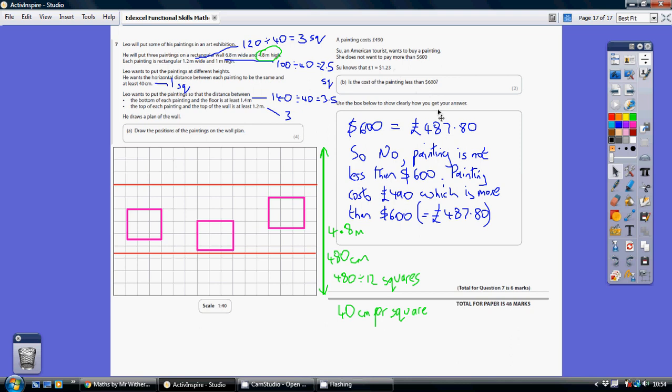So basically she's prepared to pay up to 487 pound 80, but they actually cost 490 pounds. So is she going to be able to afford one? No, she isn't because she's only prepared to pay $600, which is 487 pound 80, when in fact she needs to pay 490 pounds. So is the cost of the painting less than $600? No, it isn't.